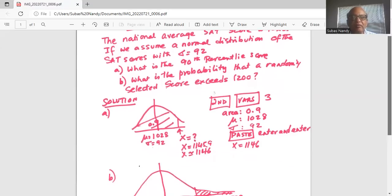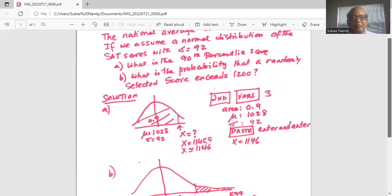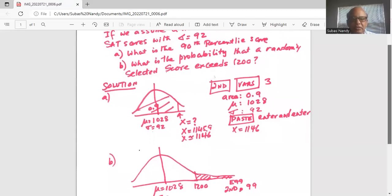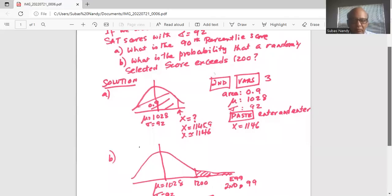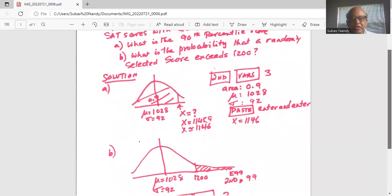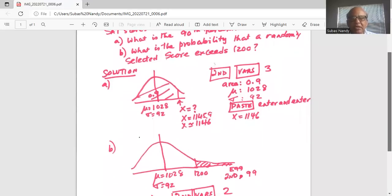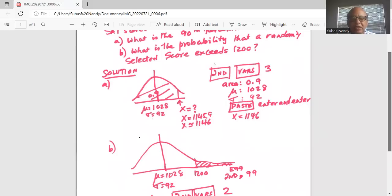Part B, what is the probability that a randomly selected score exceeds 1200? So, again, we draw a bell-shaped distribution. The center where the peak is the highest, mu is 1028, sigma standard deviation is 92. 1200 is greater than 1028, so it is on the right tail, and we want to find the probability or the area under the normal curve on the right of 1200.